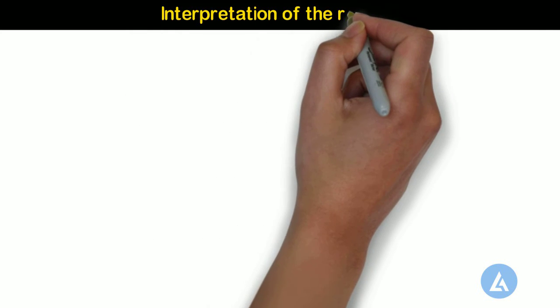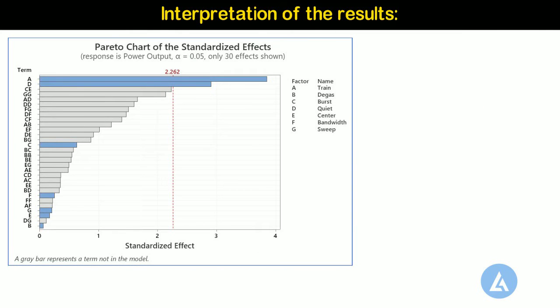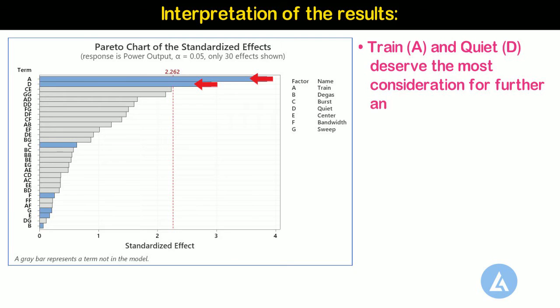Interpretation of the results. In the Pareto chart, terms that are in the model have blue bars and the terms that are not in the model have grey bars. The engineer sees that the largest main effects are for Train A and Quoit D. From the screening experiment, the engineer concludes that these two factors deserve the most consideration for further analysis.